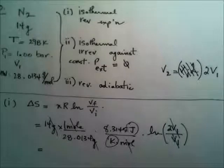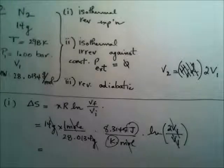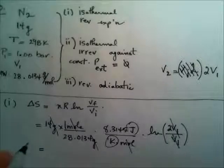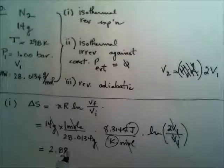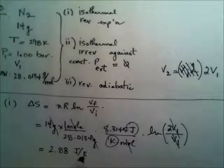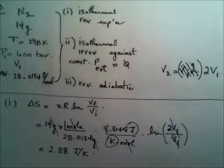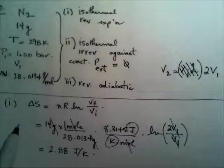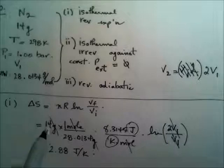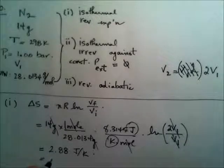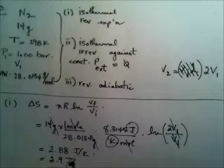Multiply that by 8.3145 and then by 14 and divide it by 28.0134 if you like. And I have a value of 2.88 joule per kelvin for the delta S in this first described path. And because that's a 2 sig fig value, I'm just going to change this to 2.9 J/K.